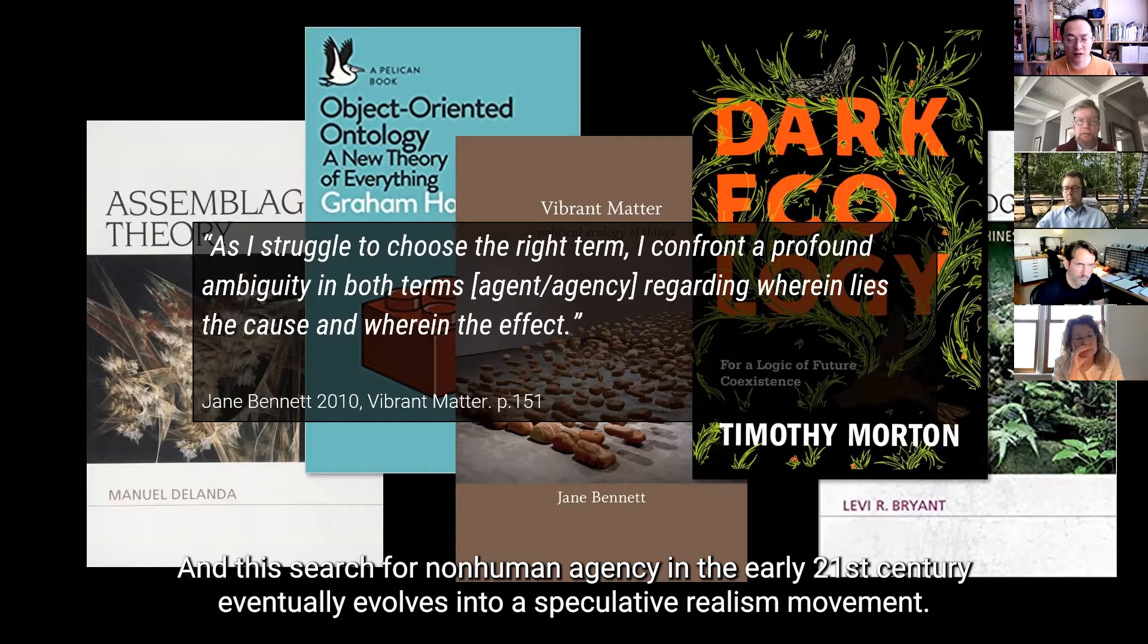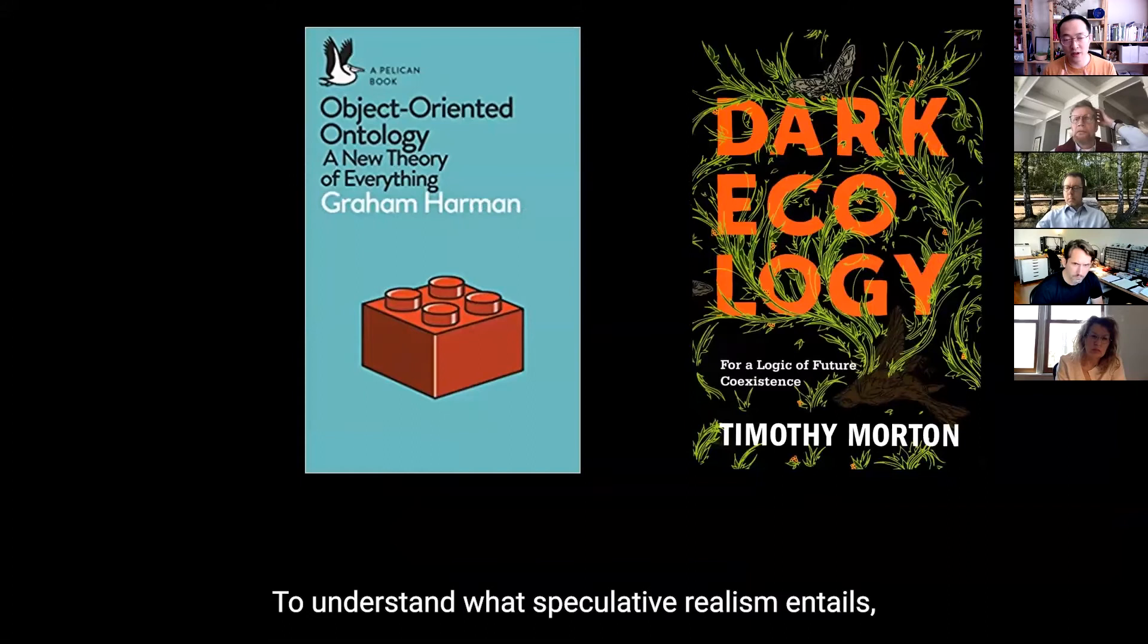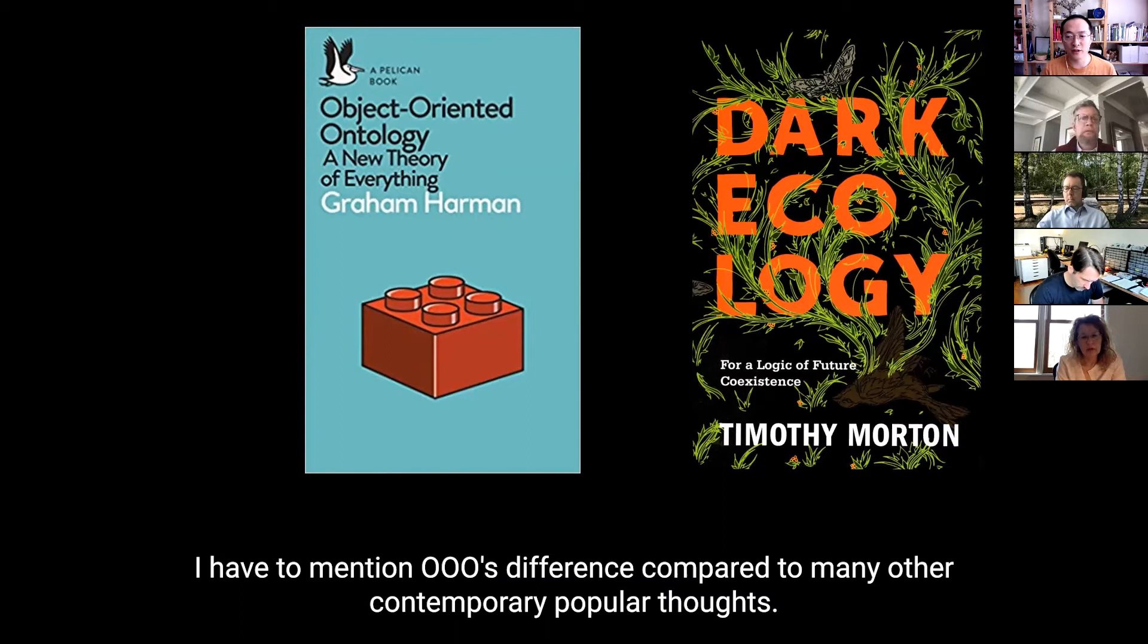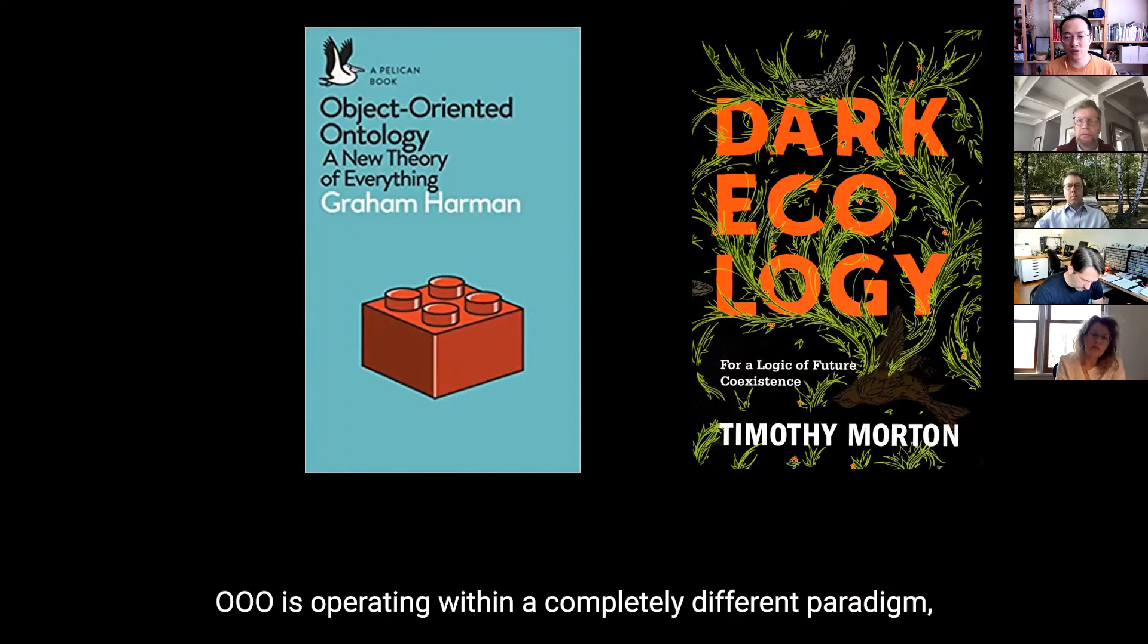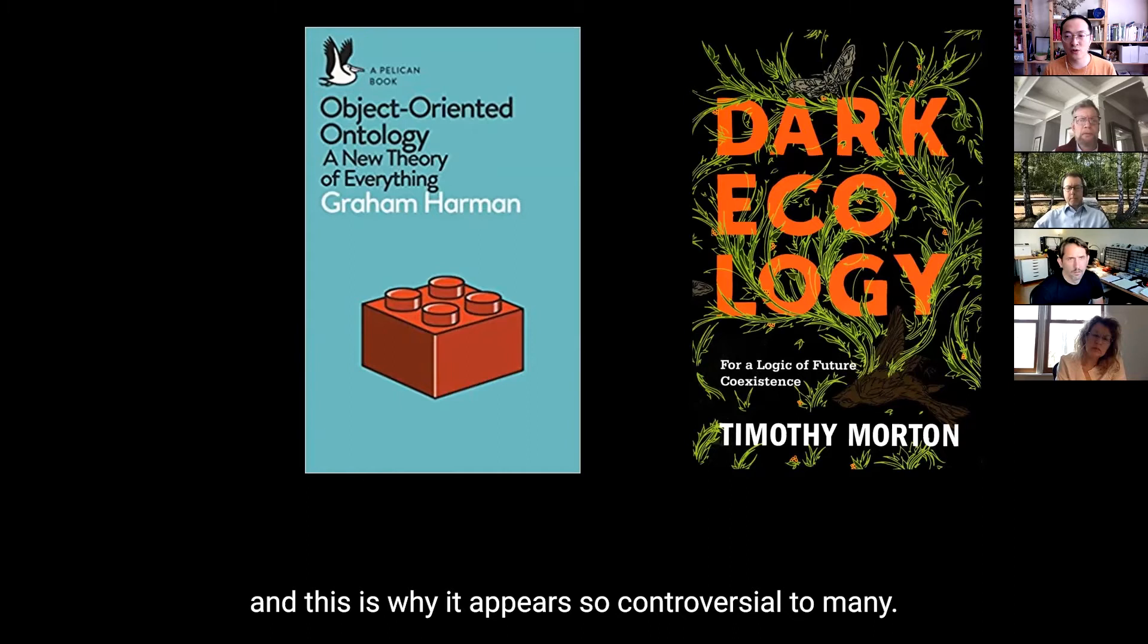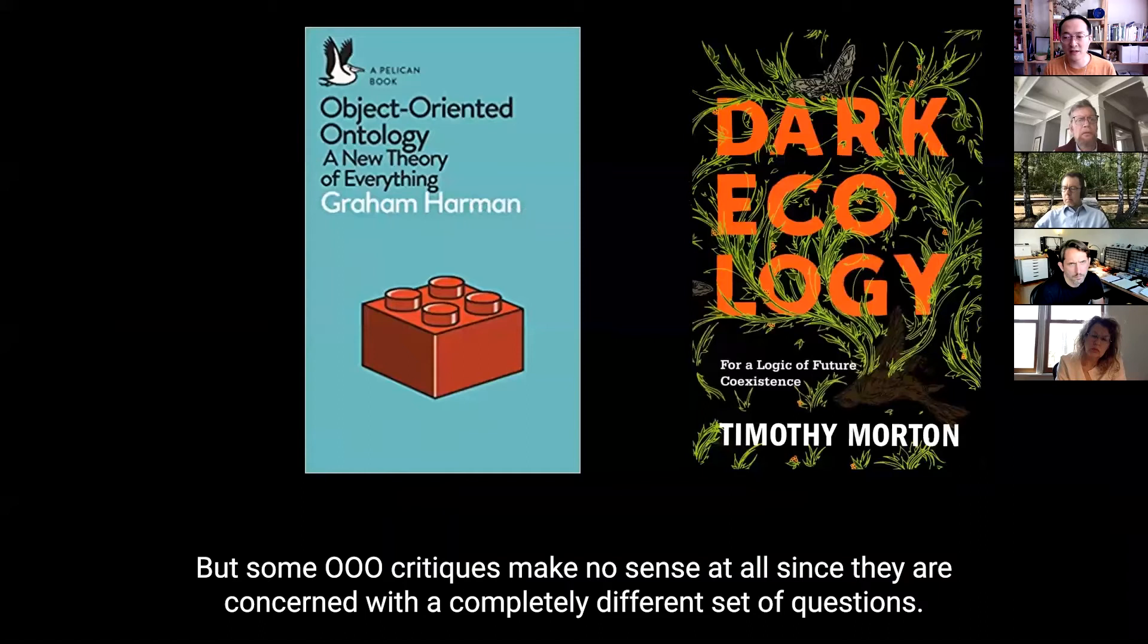And this search for non-human agency in the early 21st century eventually evolves into a kind of speculative realism movement that we are in now. And to understand what this speculative realism entails, I have to mention Triple O's difference comparing to other contemporary popular thoughts here, is that Triple O is operating within a completely different paradigm. And this is why it appears so controversial to many. But the things that a lot of the critiques of Triple O makes no sense at all, since they're concerned with a completely different set of questions.